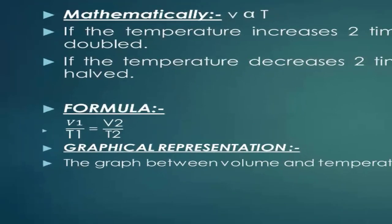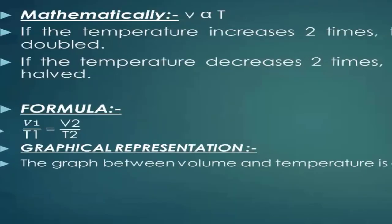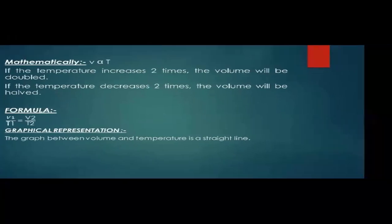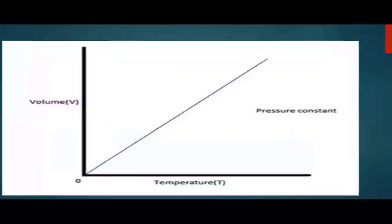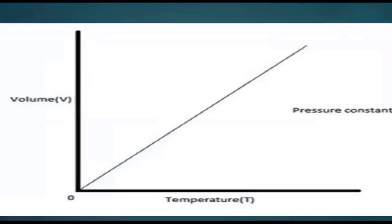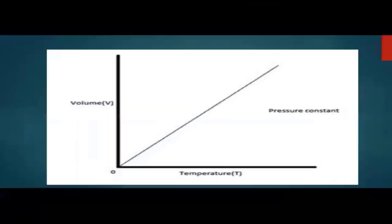Graphical representation: the graph between volume and temperature is a straight line. If we plot a graph between volume and temperature at constant pressure, it will be a straight line increasing with volume.